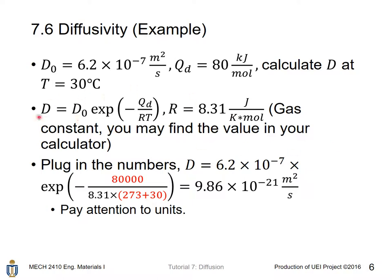By the equation stated in the last slide, using R equals 8.31 J per K per mole, which is the gas constant. You can find the value in your calculator. And be careful of the unit.